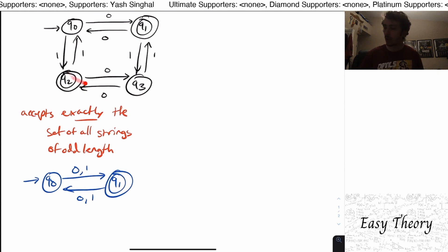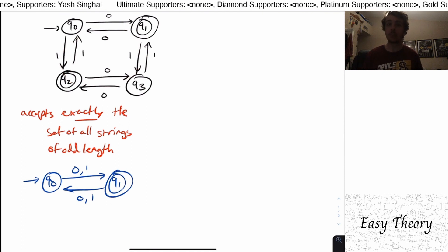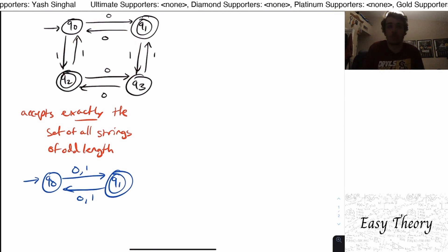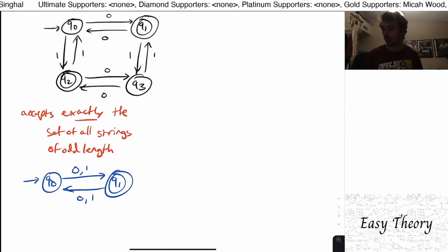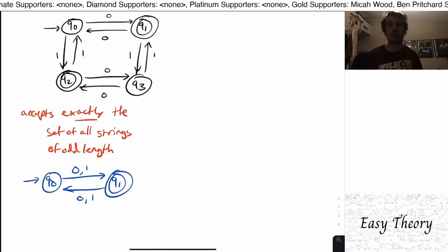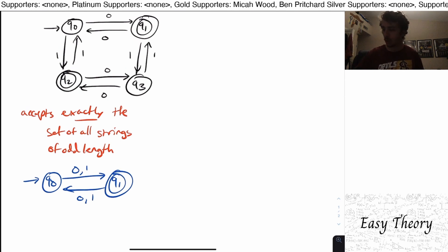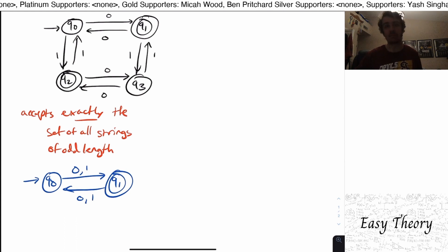But if I wanted to, for example, provide this to a computer, well, I need to be able to provide it in some format that the computer can understand. Obviously, I can't just say, well, here's a picture of one. Now figure out what the set of strings that it recognizes is. So we need to be able to write this down in a formal way. So we're going to do exactly that. So what this machine, as I alluded to earlier, is called a DFA.